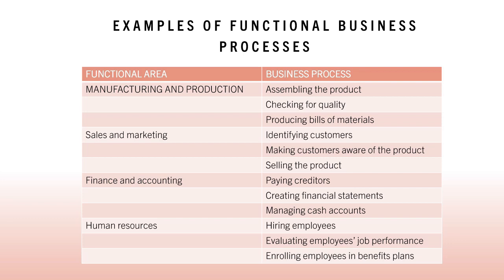Every business can be seen as a collection of business processes, some of which are part of larger encompassing processes. For instance, designing a new sailboat model, manufacturing components, assembling the finished boat, and revising the design and construction are all part of the overall production process. Many business processes are tied to a specific functional area. For example, the sales and marketing function is responsible for identifying customers, and the human resources function is responsible for hiring employees.